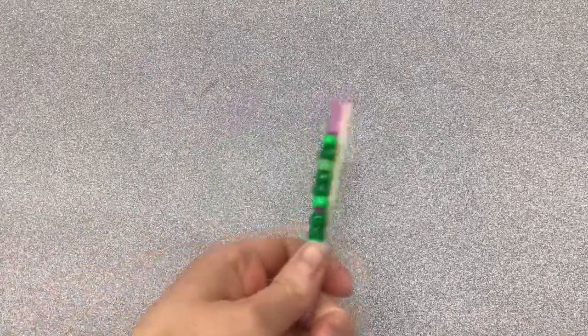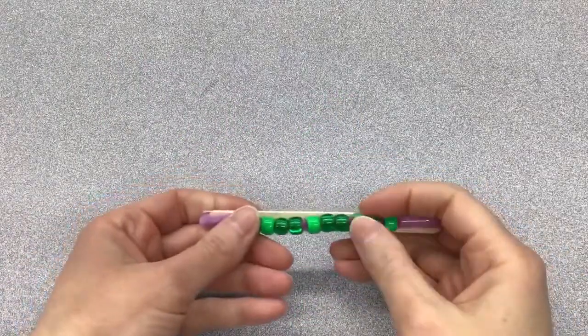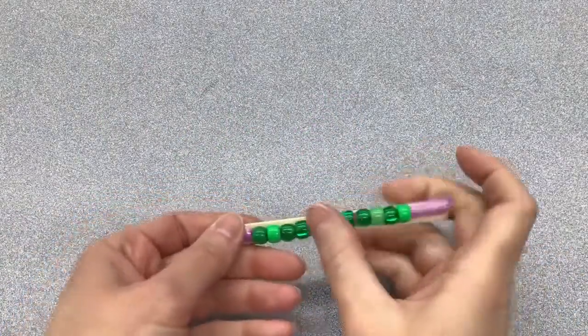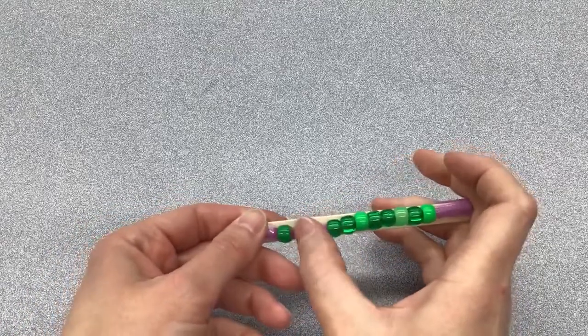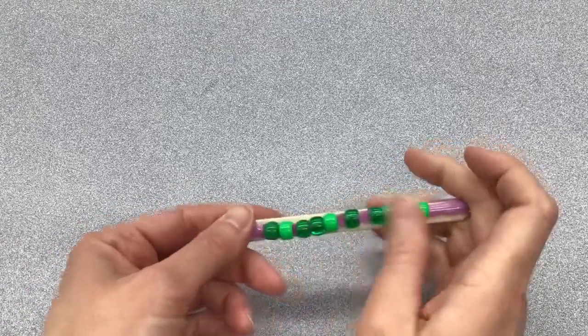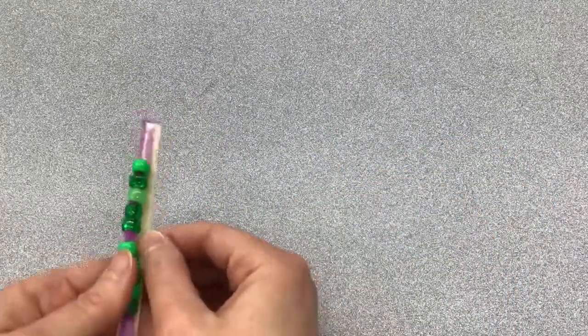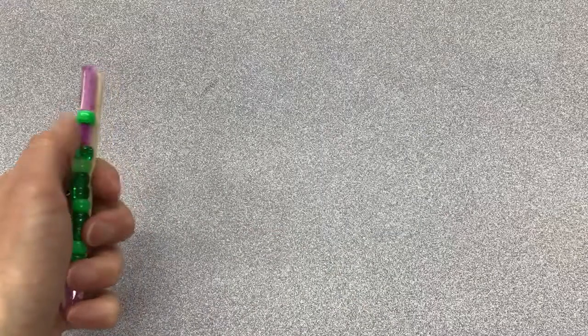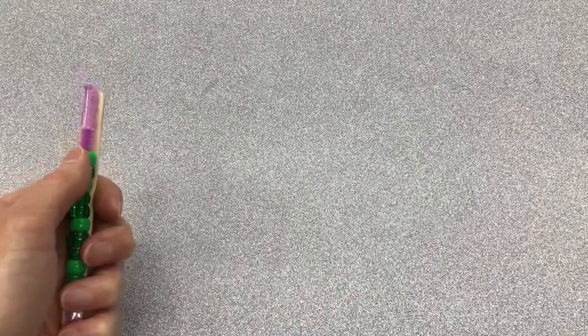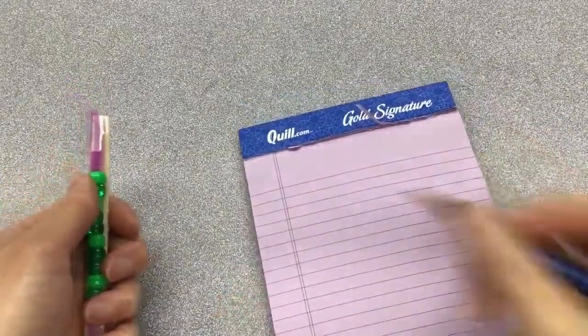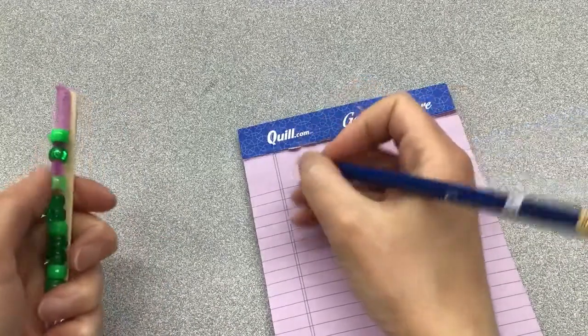So here's how to use your fidget tool. You can use your fingers or just your thumb to push the beads back and forth. They make a really nice clicky, clacky sound. And you can use them in both hands or just in one hand like this. And if you want to use it while you're writing, you can hold it in your non-dominant hand and then write.